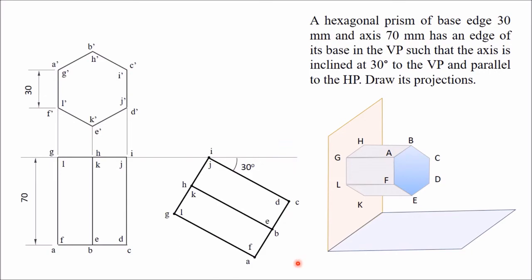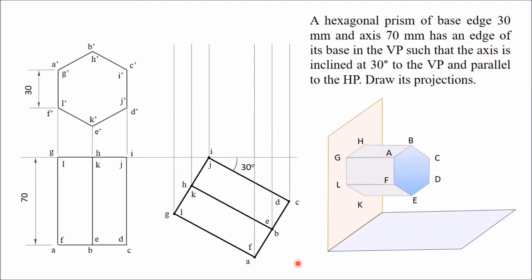Now the final front view can be obtained by projections. Draw vertical projectors from all these points, then draw horizontal projectors in sequence. From A, I have drawn horizontal projectors. So A, G, C, and I — four points are in the same line. Mark all these points: G, I, A, and C. Similarly, draw another horizontal projector from B to get points B and H.